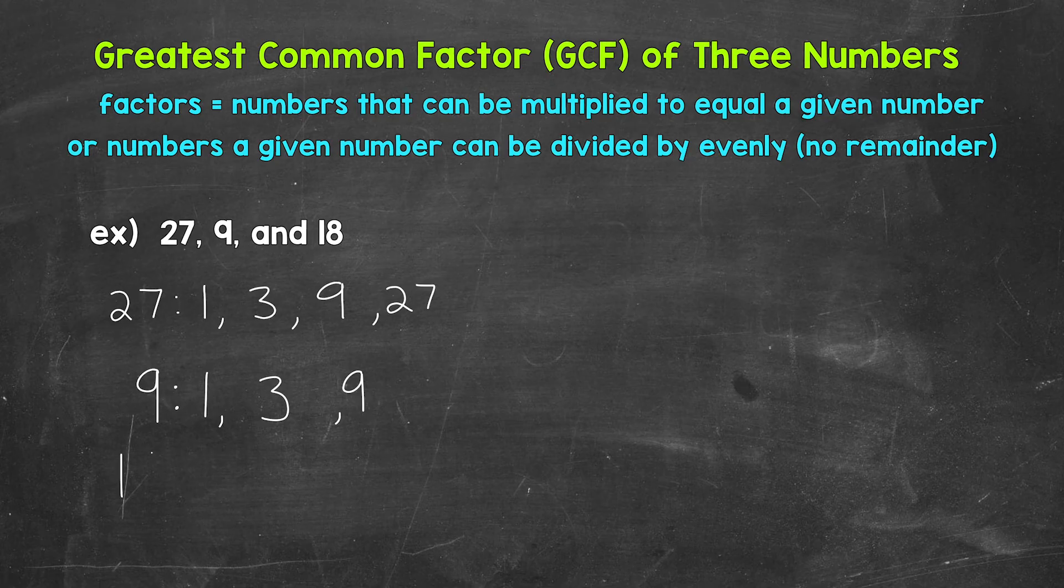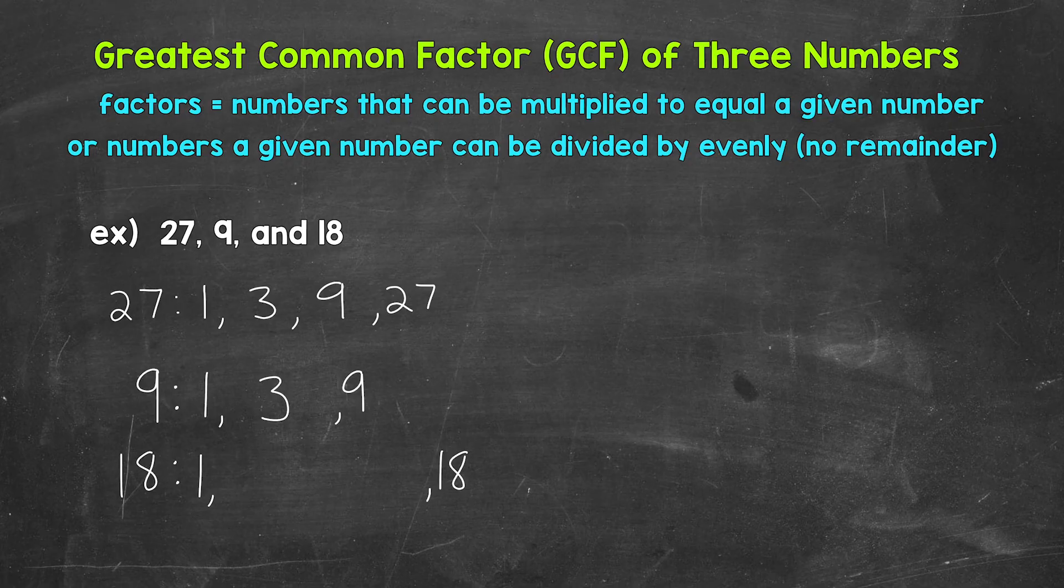Lastly, let's list the factors of 18. We can start with 1 and 18. Next, we have 2 and 9. 2 times 9 equals 18. So 2 and 9 are factors of 18.